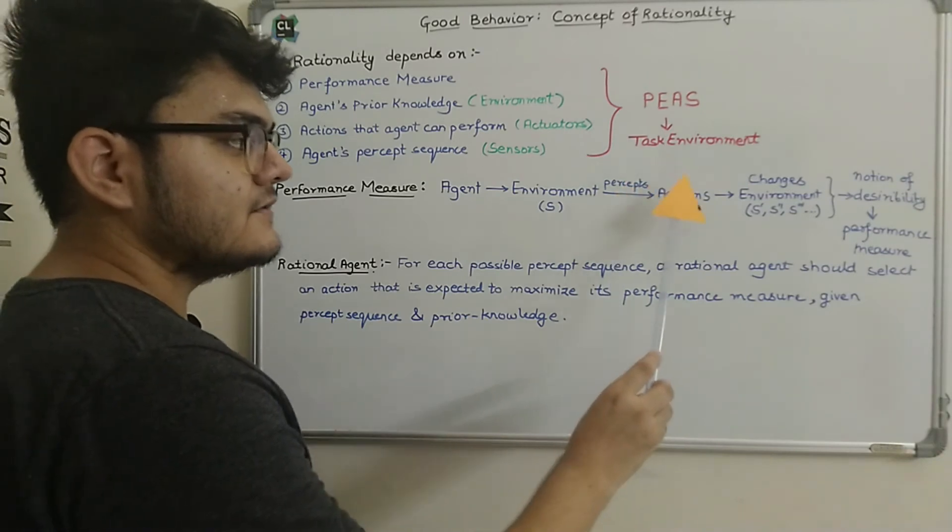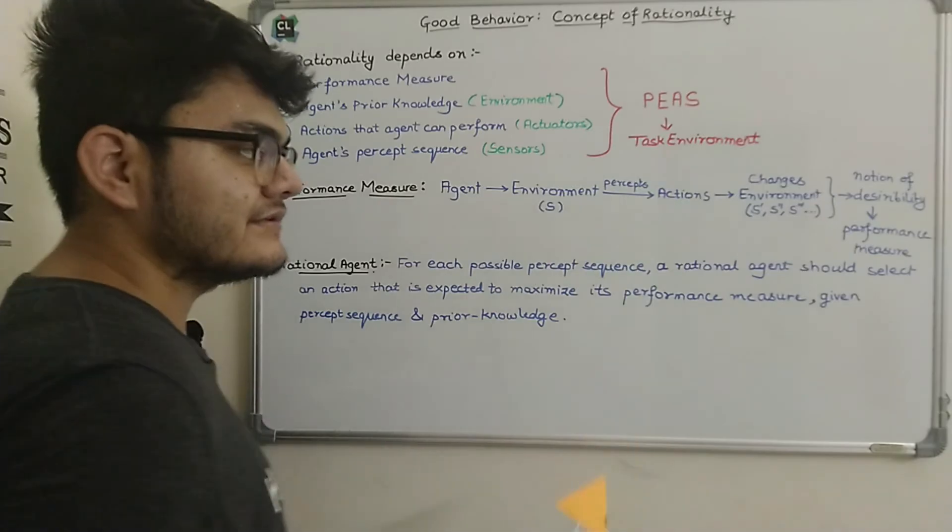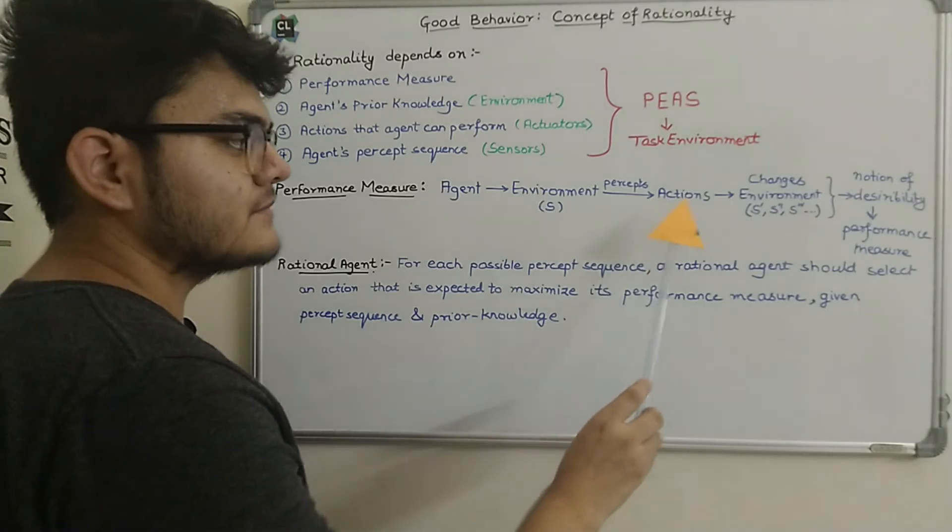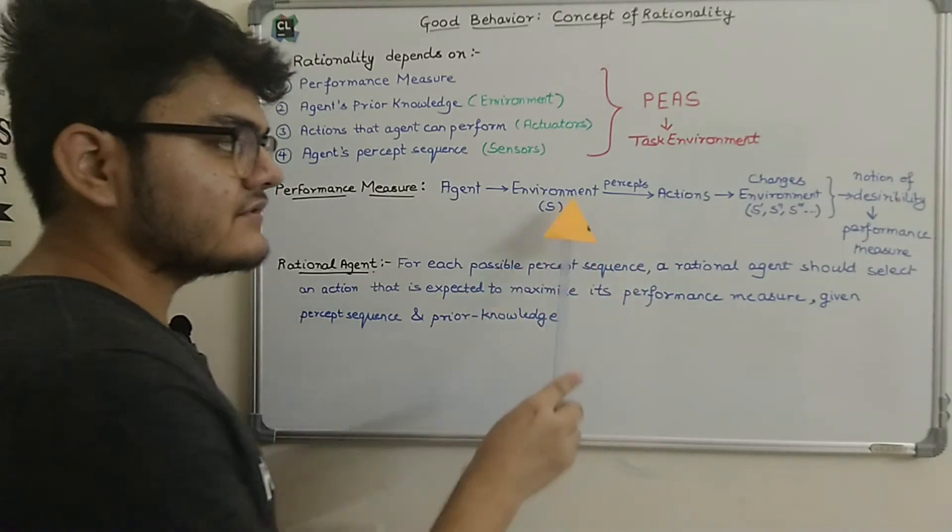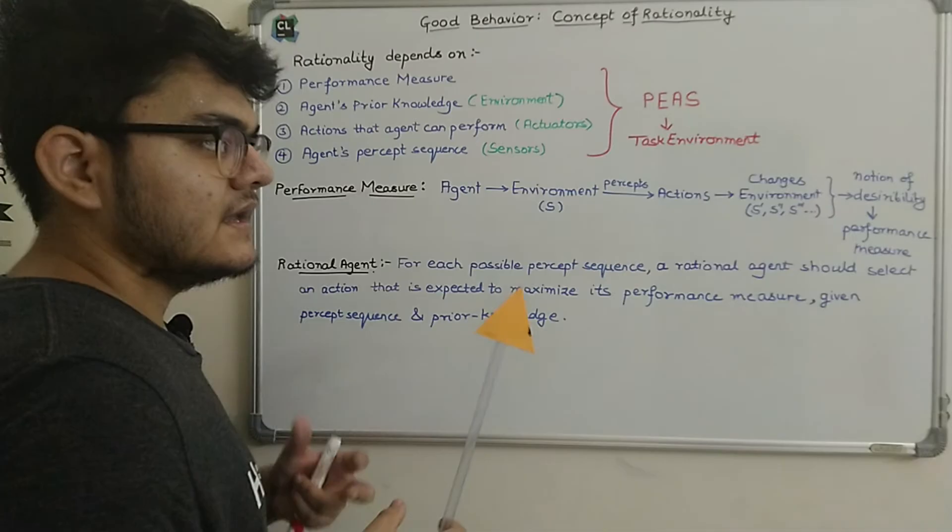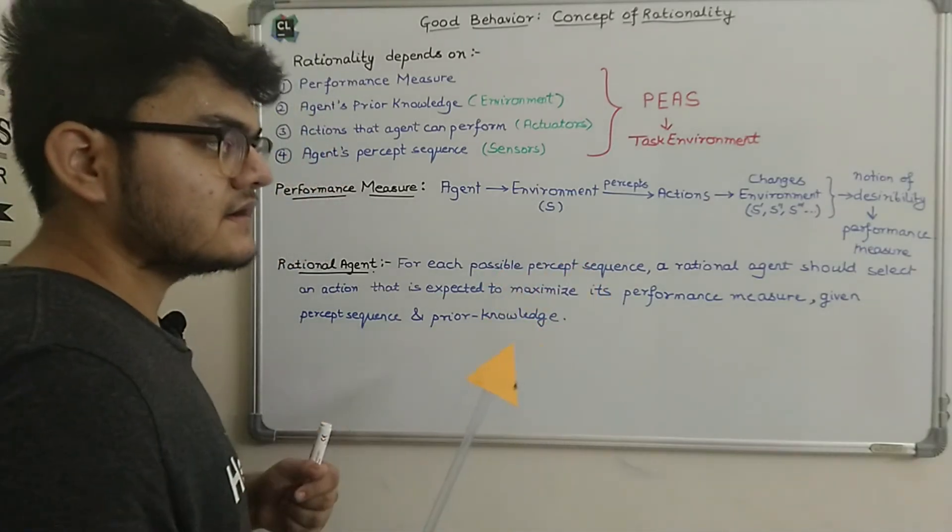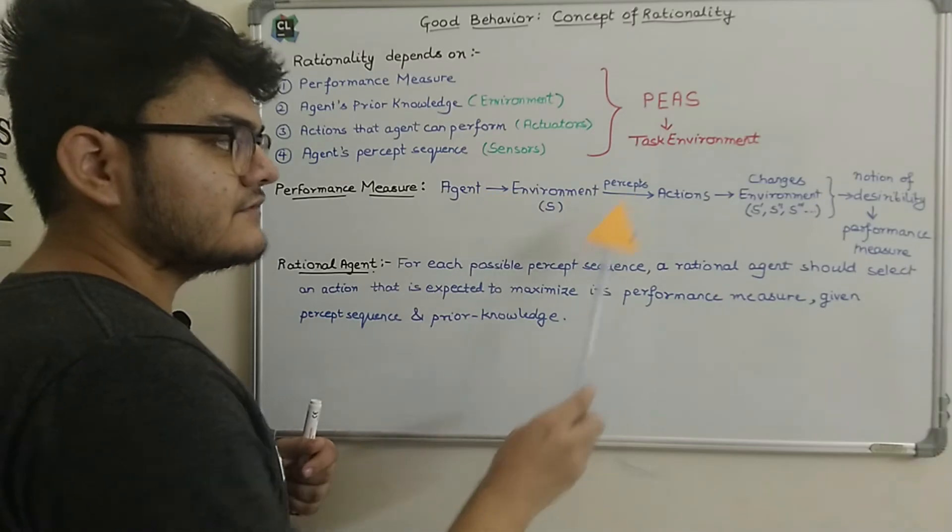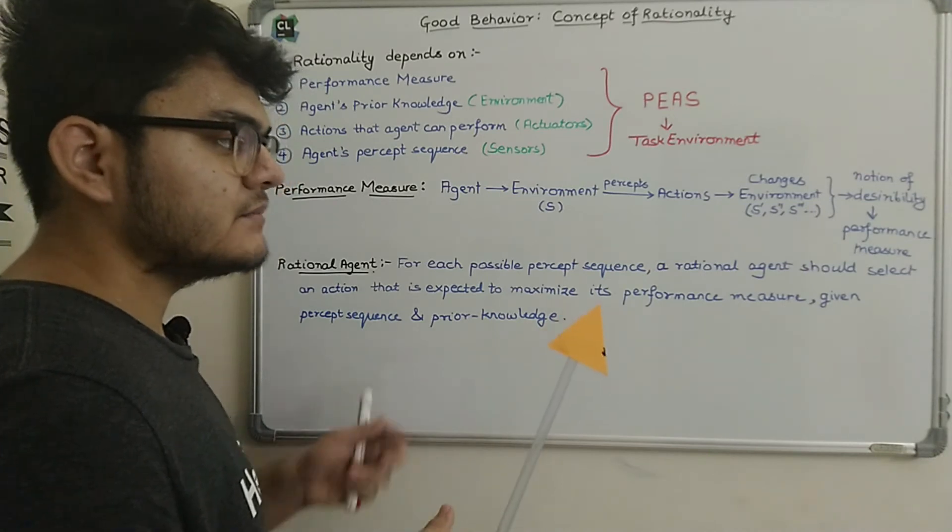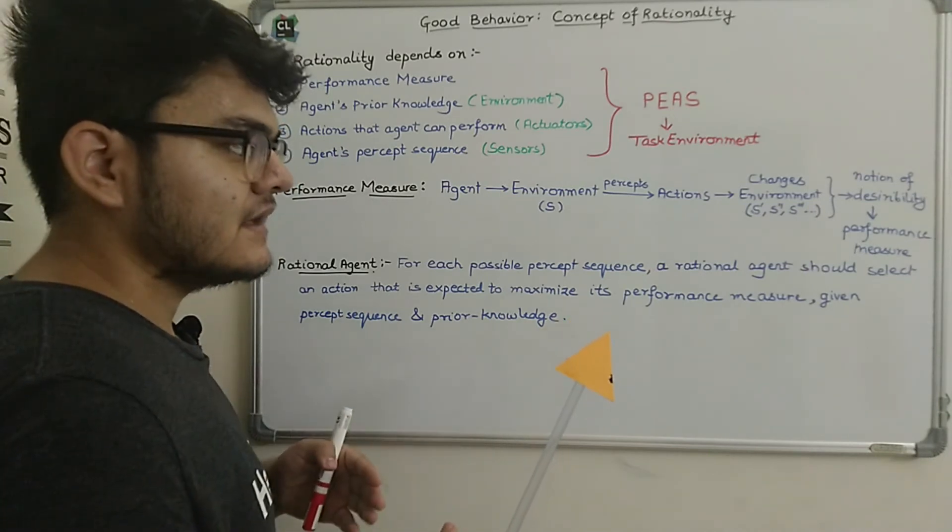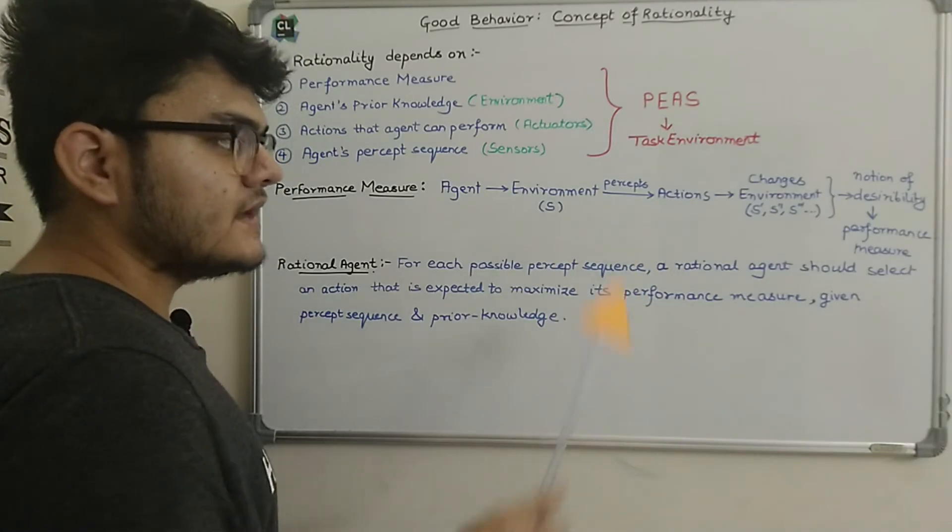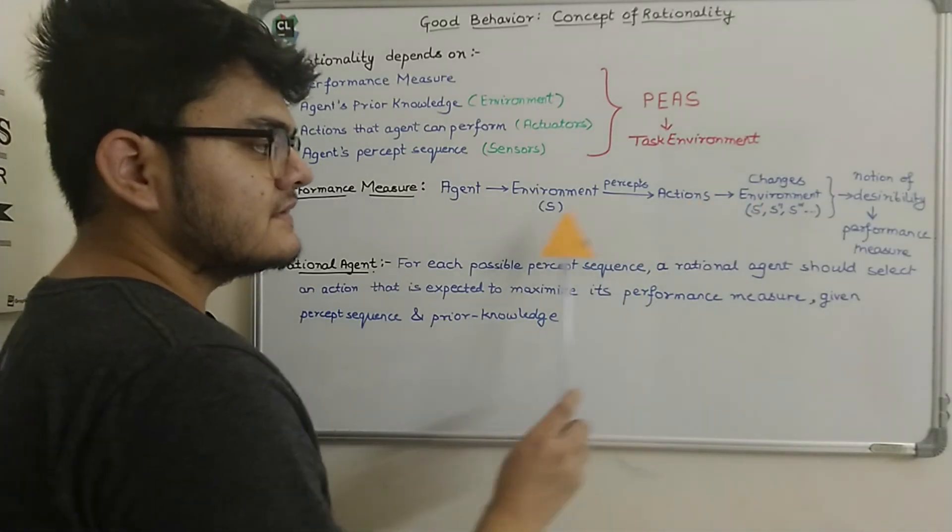So the environment can be in some state. Now the agent will use its sensor to perceive the environment and then using actuators, it will perform the actions. So agent will perceive the environment and perform some actions. After performing some actions on the environment, it will make some changes in the environment. In case of the self-driving car, the AI agent will have to perform actions like when to apply the braking system or when to move or change the lanes and when to stop and when to start.